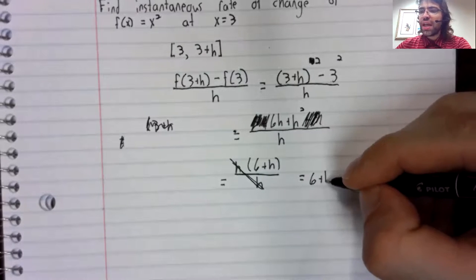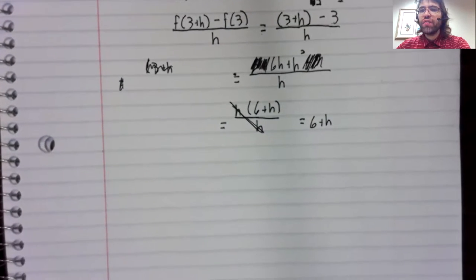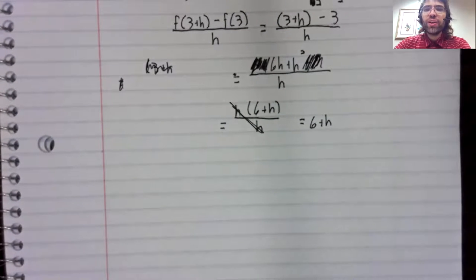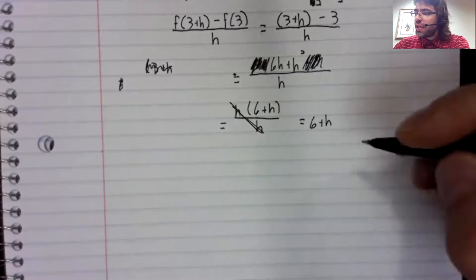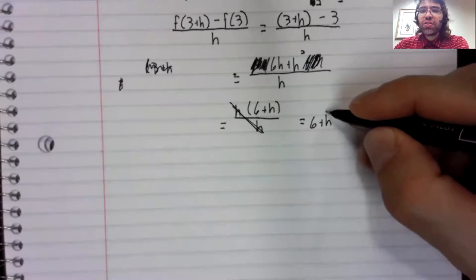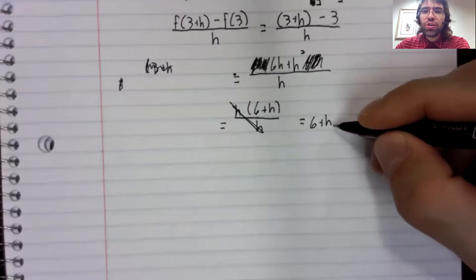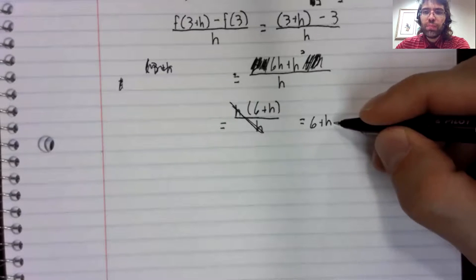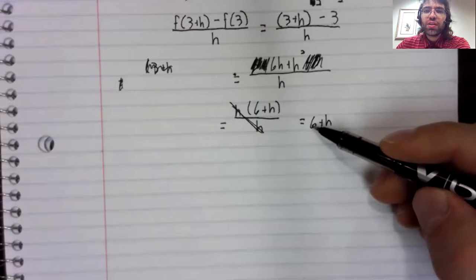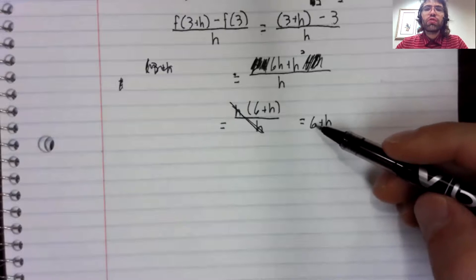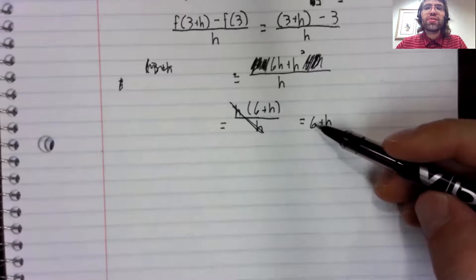And these h's cancel. So this average rate of change is six plus h. And as h gets closer and closer to zero, six plus h gets closer and closer to six.